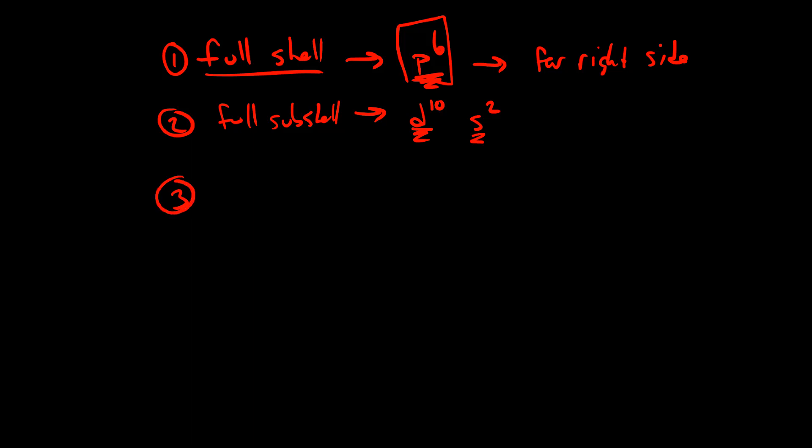The third situation, which is not quite as stable as a full subshell, would be a half full subshell. This would be like P3, right? Because the P subshell has a capacity of six, so three electrons would be half full or D5.